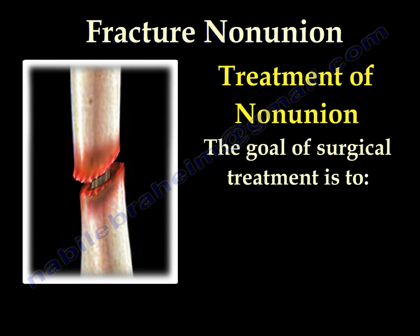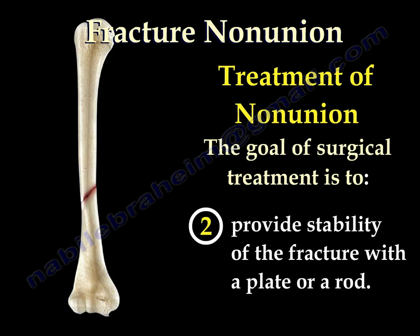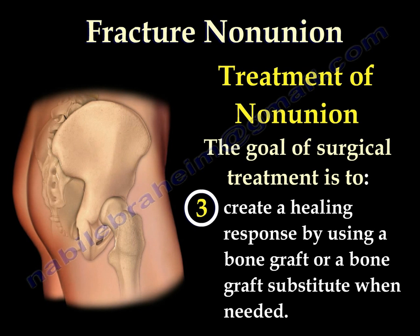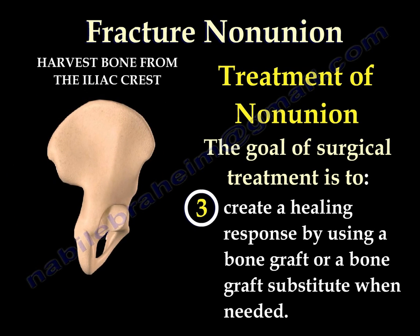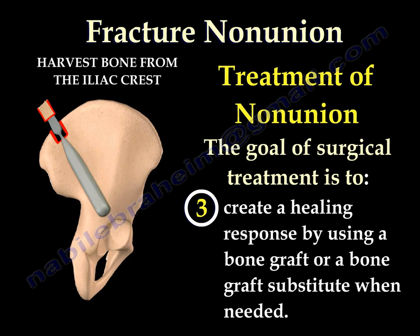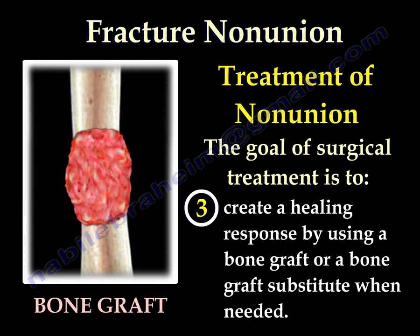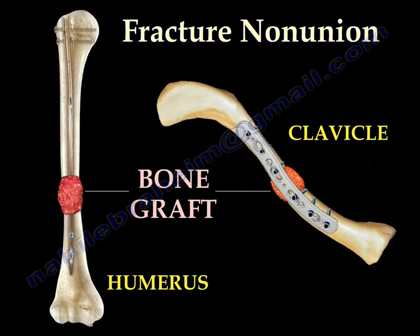The goals of surgical treatment are: number one, restore vascularity of the bone; number two, provide stability of the fracture with a plate or a rod; and number three, create an atmosphere of a healing response — important to heal the fracture — by using bone graft or a bone graft substitute when needed. You can see an example of clavicle fracture treated by a plate and bone graft, and another one of humeral fracture treated by a rod and bone graft.